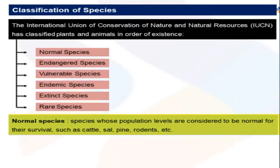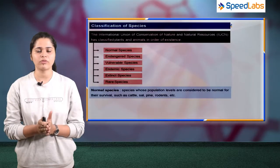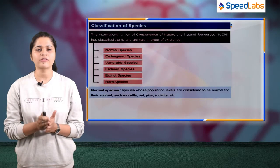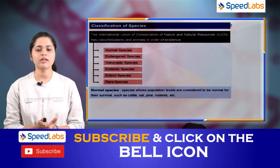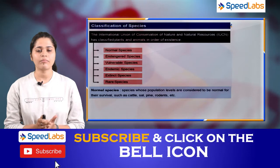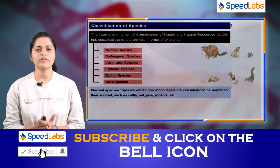Firstly, normal species are the species whose population levels are considered to be normal for their survival. Examples include cattle, sal, pine, and rodents.